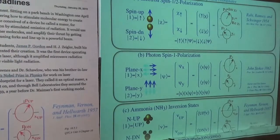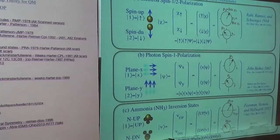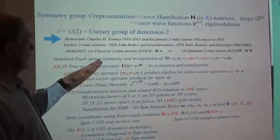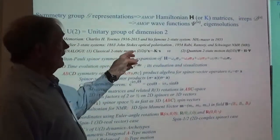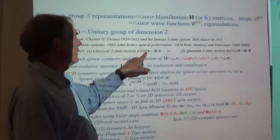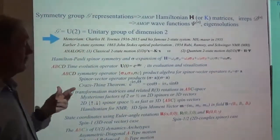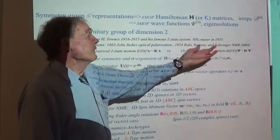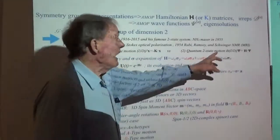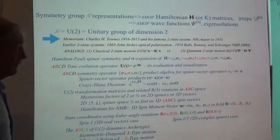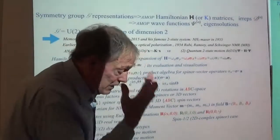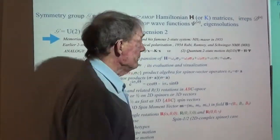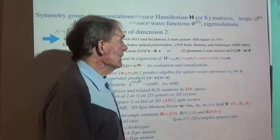The main thing I want to get out of the way first is showing that the classical two-state motion — the Newton-Hooke equation — Newton's acceleration of a two-dimensional real vector is quite analogous to the quantum two-state motion given by the single derivative times i of a complex wave function, the Schrödinger equation.